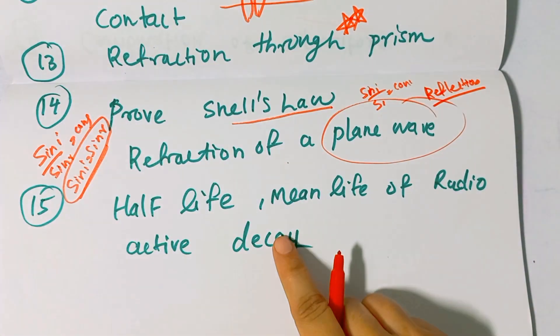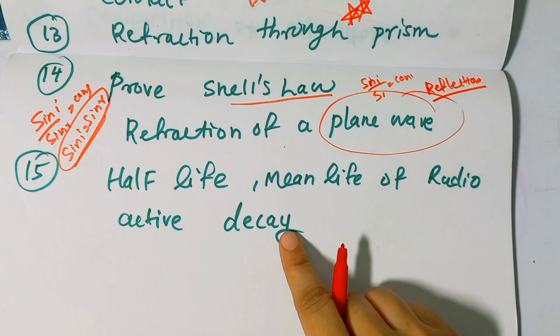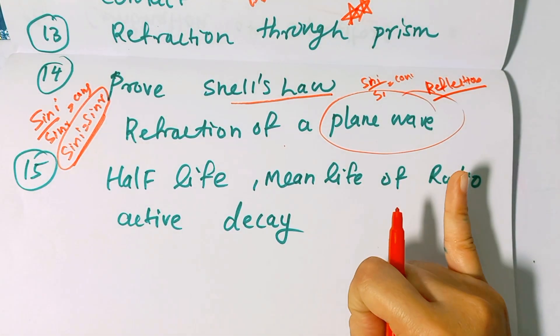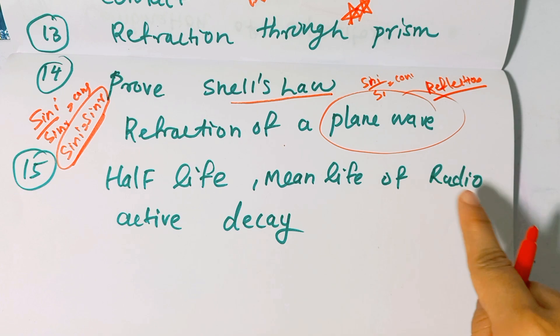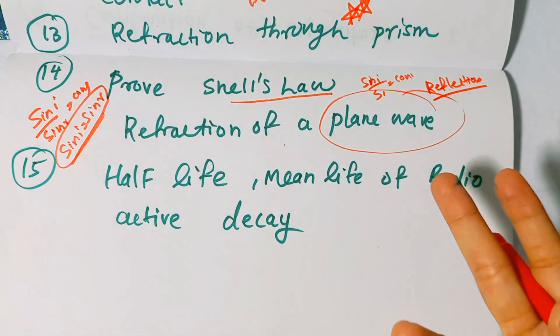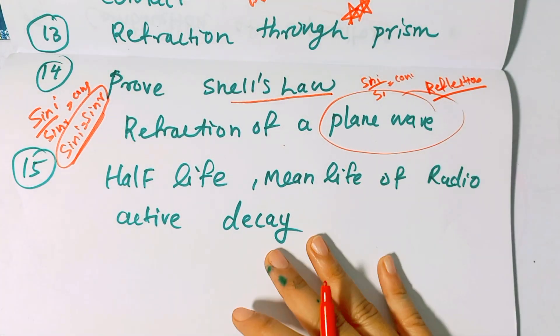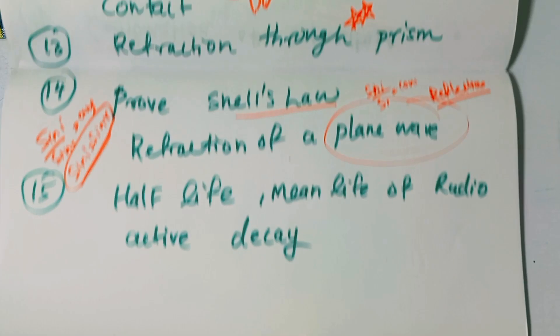In modern physics, there are three derivations: half life, mean life, and half life of radioactive decay. These are important among the 15 derivations.